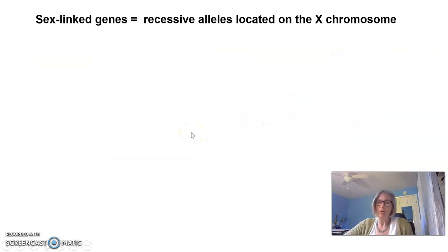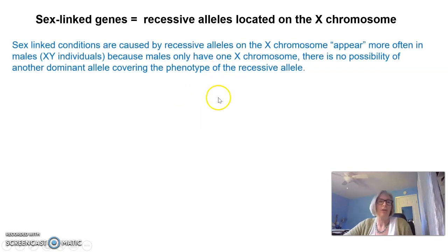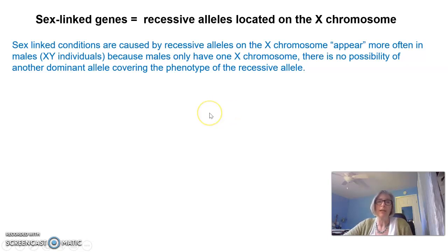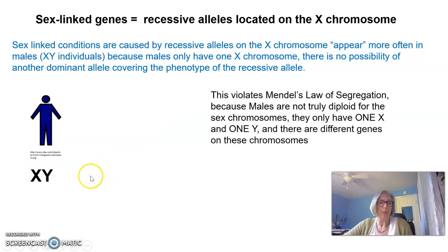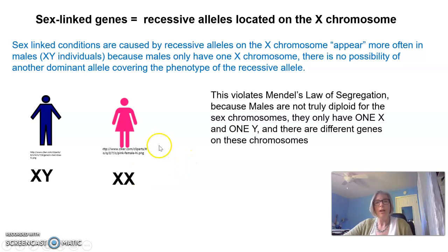I want to talk about the first situation — sex-linked genes. Sex-linked genes are recessive alleles located on the X chromosome. Sex-linked conditions appear more often in males, or XY individuals, because males only have one X chromosome, so there's no possibility of another dominant allele covering the phenotype of the recessive allele. Males are not truly diploid for their sex chromosomes, as opposed to females, who have two X chromosomes.